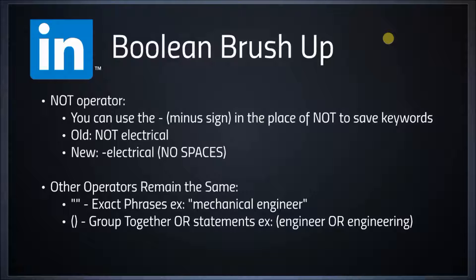Some other operators remain the same. Quotation marks help us pull back exact phrases — for example, putting quotation marks around mechanical engineer ensures that exact phrase appears in results. We can also use parentheses to group OR statements, such as (engineer OR engineering), which groups them in Boolean language so that either engineer or engineering appears in the search results.